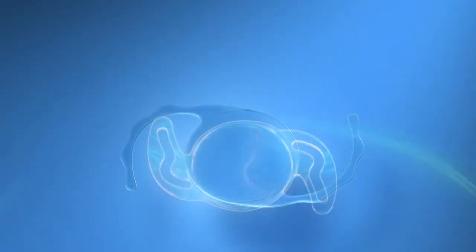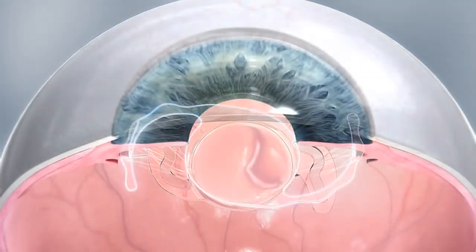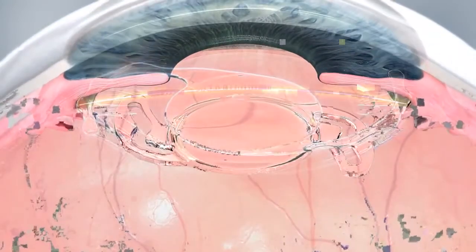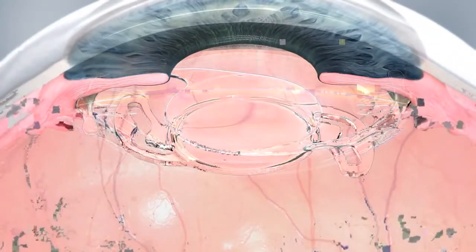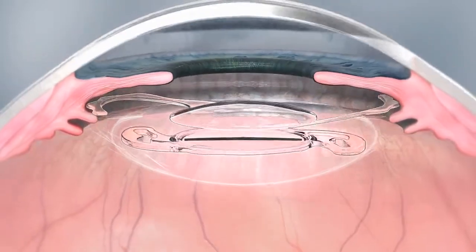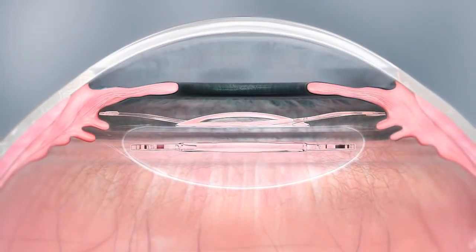After primary lens implantation, a SulcoFlex IOL can be implanted in the ciliary sulcus to correct residual emmetropia. The SulcoFlex IOL has been designed to avoid the problems associated with conventional piggyback procedures.